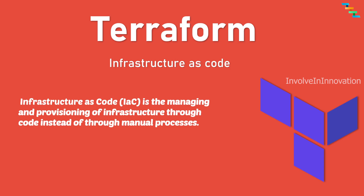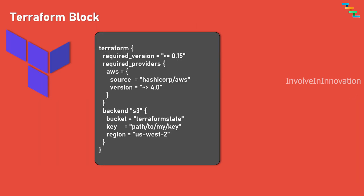First, we will see about the Terraform block. In Terraform, the Terraform block is a top-level block that is used to configure various settings and behavior of your Terraform project. It allows you to define global settings that apply to the entire Terraform configuration. The Terraform block is typically placed at the top of your configuration file, starting with the keyword 'terraform' followed by a set of braces.